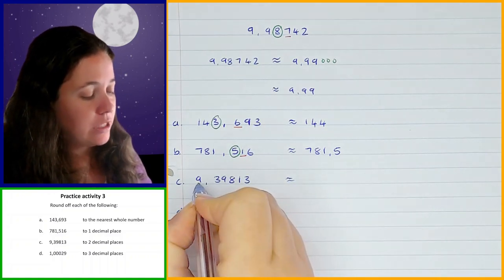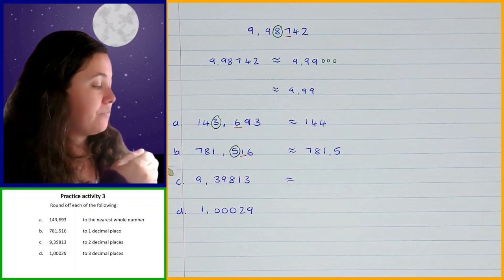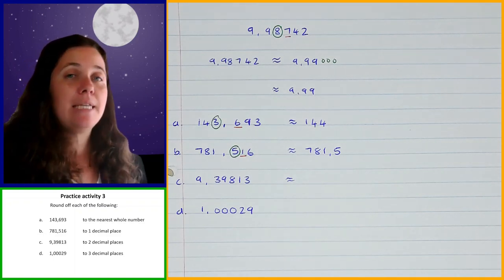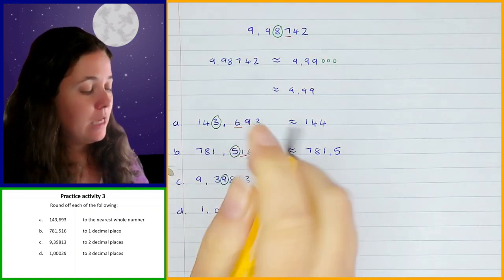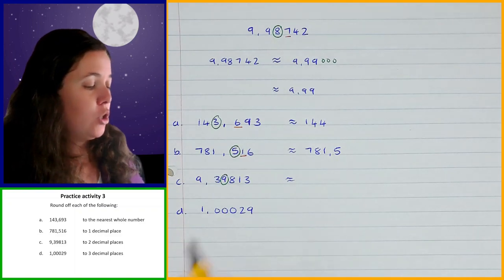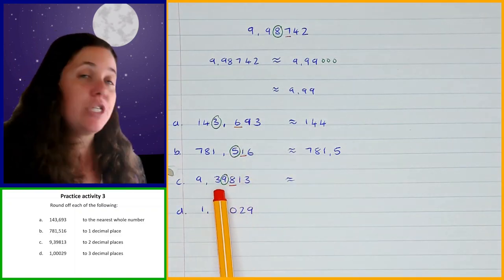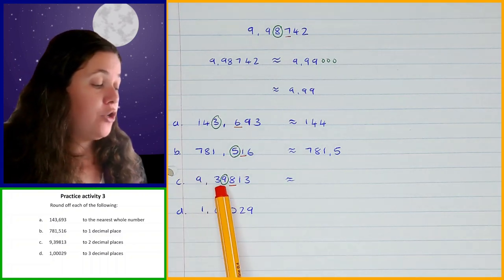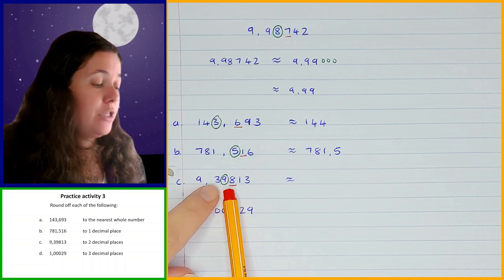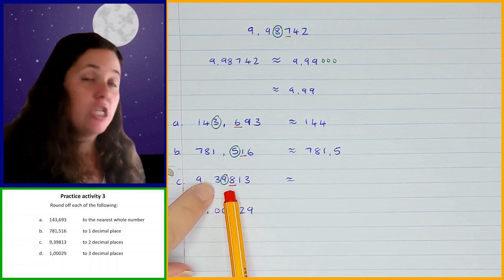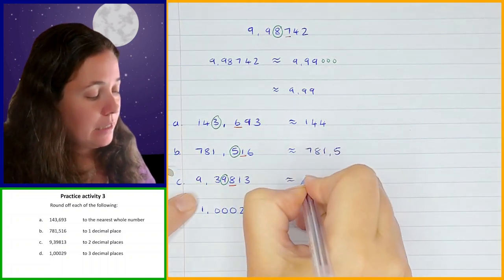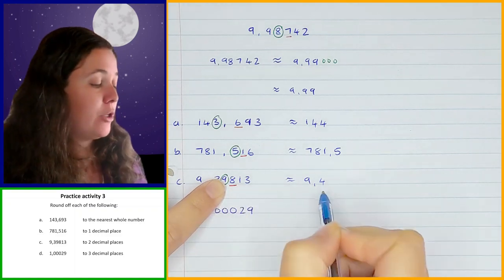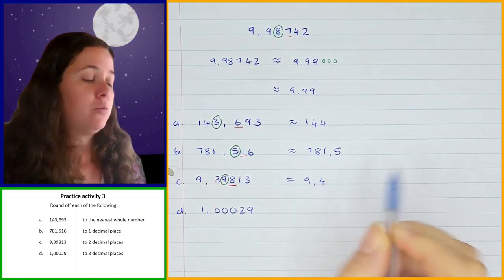Next: I've got 9.39813 and need to round to two decimal places. The digit in the second decimal place is the nine. Looking at the digit straight after it — the eight — eight is in the five or more category, so the nine goes up one, changing to 10. Just like before, the nine changes to zero and the digit in front — the three — changes to four. Everything else after it also changes to zero, and I don't need to write those trailing zeros. So the answer is 9.4.